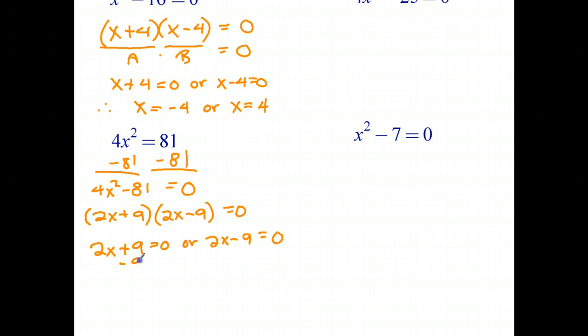A times b equals 0 implies that 2x plus 9 equals 0 or 2x minus 9 equals 0. Solving this equation we subtract 9 from both sides, leaving just the 2x on the left, negative 9 on the right. And if I divide both sides by 2, I end up with x equals negative 9 over 2.